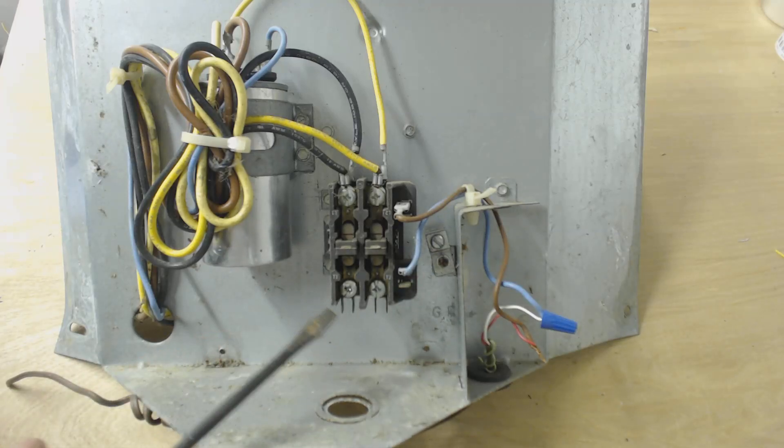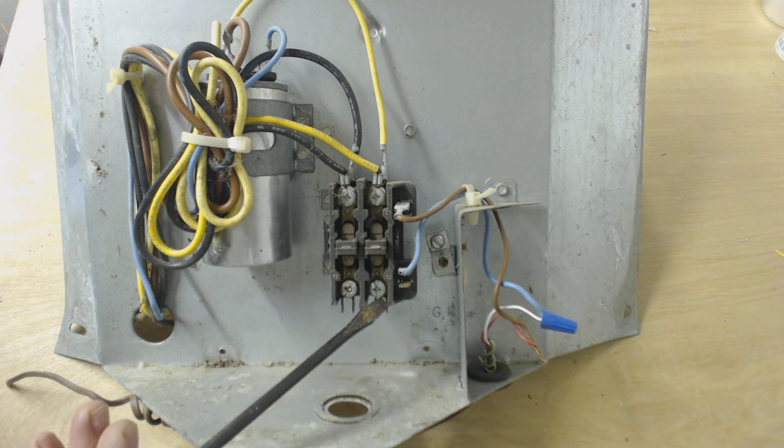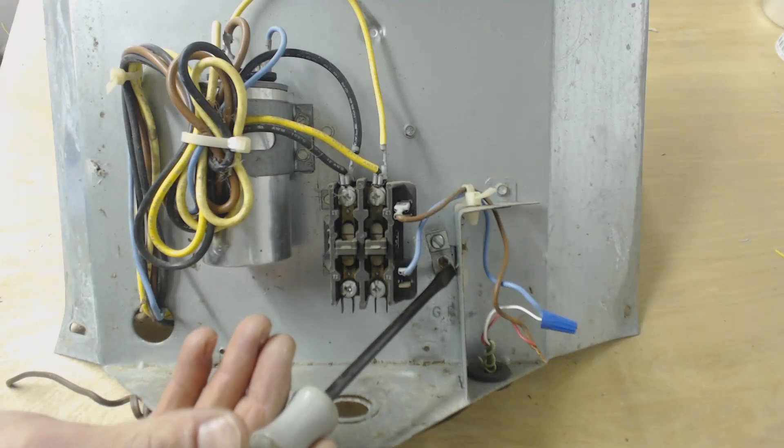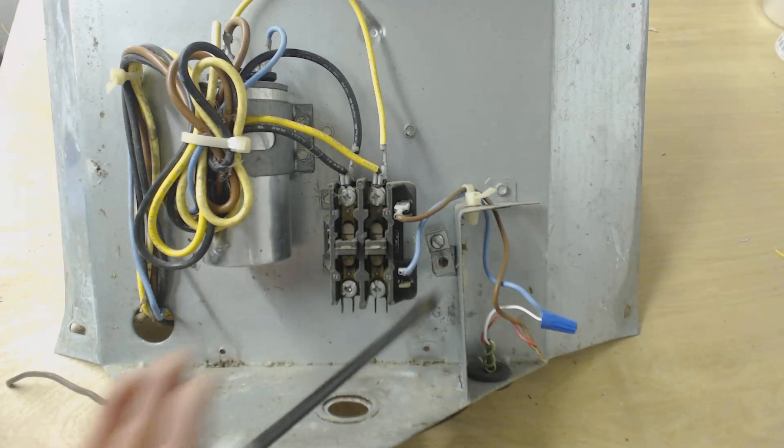For the hot wires, you just stick it underneath each of these terminals and you tighten each one of them down. Then you just put your ground wire underneath the copper lug or the aluminum lug, and then you tighten that one down.